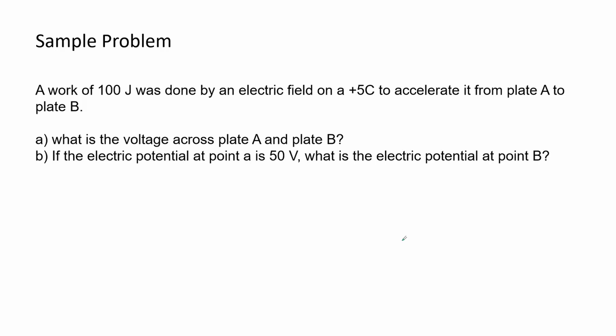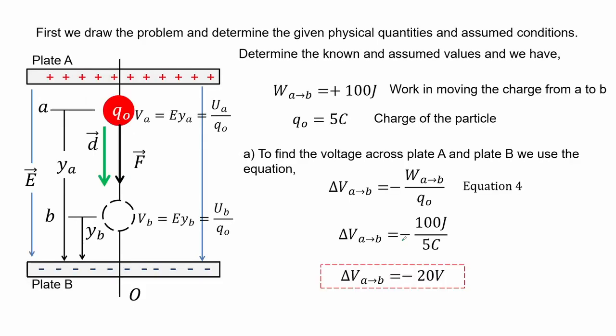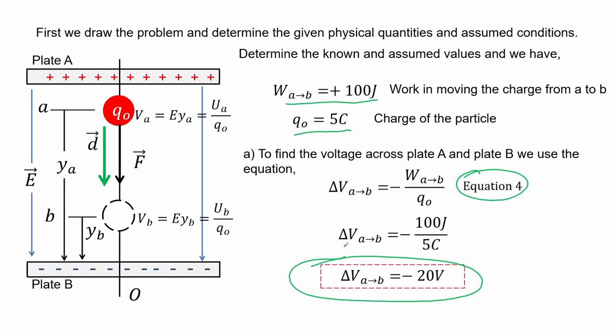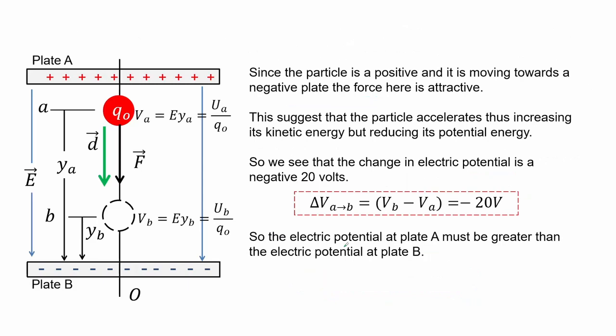Here we have another example. A work of 100 joules was done by an electric field on a +5 coulomb charge to accelerate it from plate A to plate B. Part A: what is the voltage across plate A and plate B? Part B: if the electric potential at point A is 50 V, what is the electric potential at point B? First we draw the problem, determine the known values — the work done in moving the charge from A to B and the charge of the particle. Using the equation for voltage we get negative 20 volts. Since the particle is positive and moves toward a negative plate the force is attractive, so the particle accelerates, increasing kinetic energy but reducing potential energy, giving a change in electric potential of negative 20 volts.